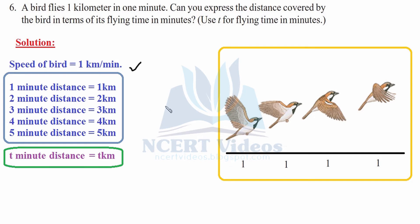The speed of bird is given as 1 kilometer per minute. It is given in the question. So 1 minute distance is 1 kilometer, 2 minutes is 1 plus 1, which is 2 kilometers. For 3 minutes, 1 plus 1 plus 1 equals 3 kilometers. For 4 minutes, 4 times 1. For 5 minutes, 5 times 1. So what we have deduced from this is that for T minutes, it will fly T kilometers. For example, for 10 minutes, it will fly 10 kilometers. Use T for flying time in minutes.